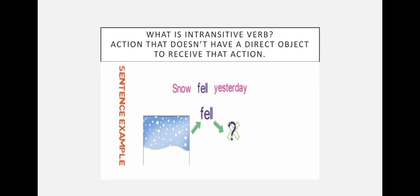For example, 'Snow fell yesterday.' Here, snow is the subject and fell is the verb. In this sentence we have the subject and the verb, but we cannot say the snow fell on whom — there is no one mentioned. It is just mentioning the time: when did the snow fall? Yesterday. But it is not telling us on whom the snow fell. So there is no direct object to receive the action, making it an intransitive verb.